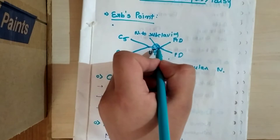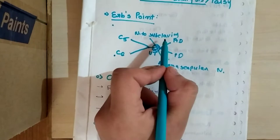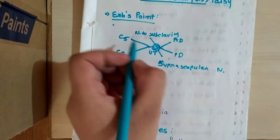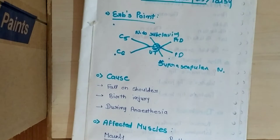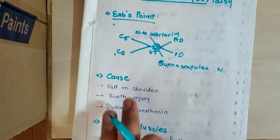This point is formed by six branches which consist of C5 and C6 roots. From these two roots there are two branches of both of them: first is suprascapular nerve, second is nerve to subclavius, and the anterior division and posterior division. So we can say that this is the point where six branches meet of the brachial plexus to form Erb's point.